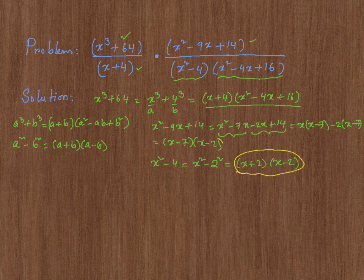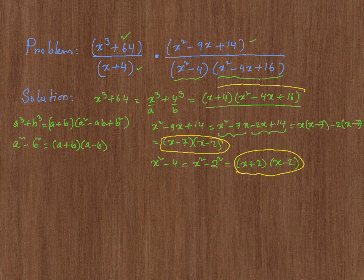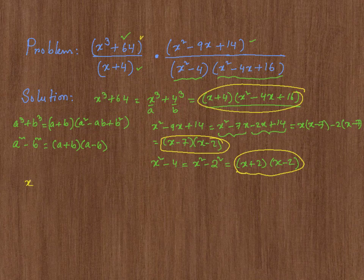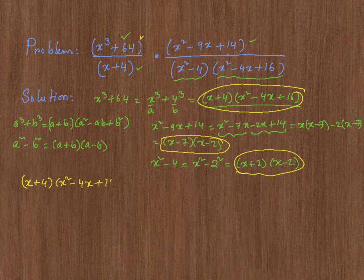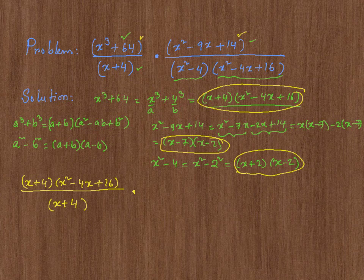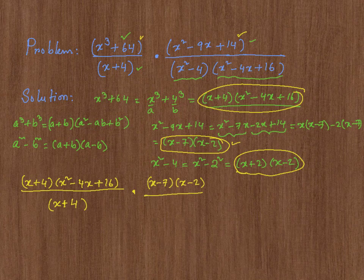This one, this one, and this one. I just plug it back into the given problem. So instead of this, I'm going to put x plus 4 times x squared minus 4x plus 16 divided by x plus 4 times x squared minus 9x plus 14. That factors to x minus 7 times x minus 2 divided by x squared minus 4 that factors to x plus 2 times x minus 2.